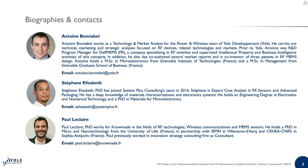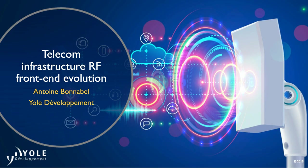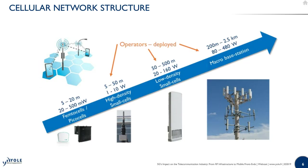Welcome everybody to this webcast. The title of my presentation is 'The Telecom Infrastructure RF Front-End Evolution.' I'll start by quickly defining what we call telecom infrastructure. We see three kinds of systems: macro base station systems, seen on top of towers, which reach up to 2.5 kilometers or 1.6 miles and run at up to 480 watts — these are found in rural areas or on top of buildings.